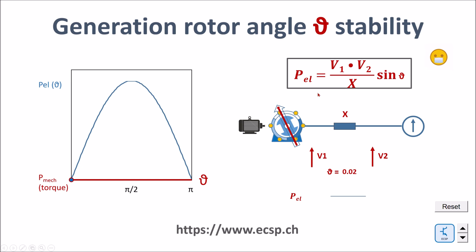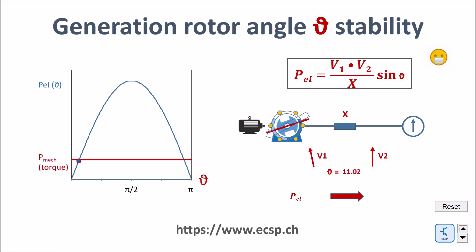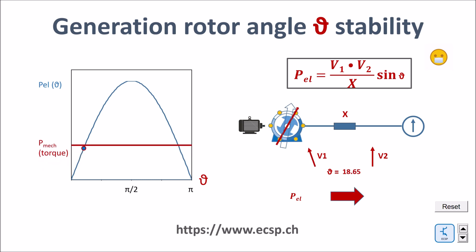According to this formula, the real power — it may also be called active power — which a generator feeds to the grid is proportional to the rotor angle theta. At the moment the rotor angle theta is zero, the real power is also zero. Now let's increase this rotor angle and you can see how the real power fed to the grid is increasing.